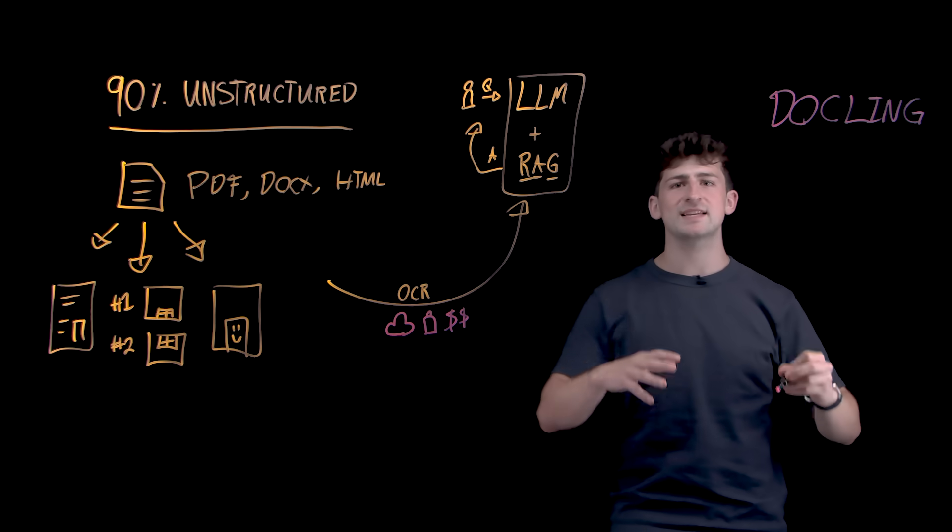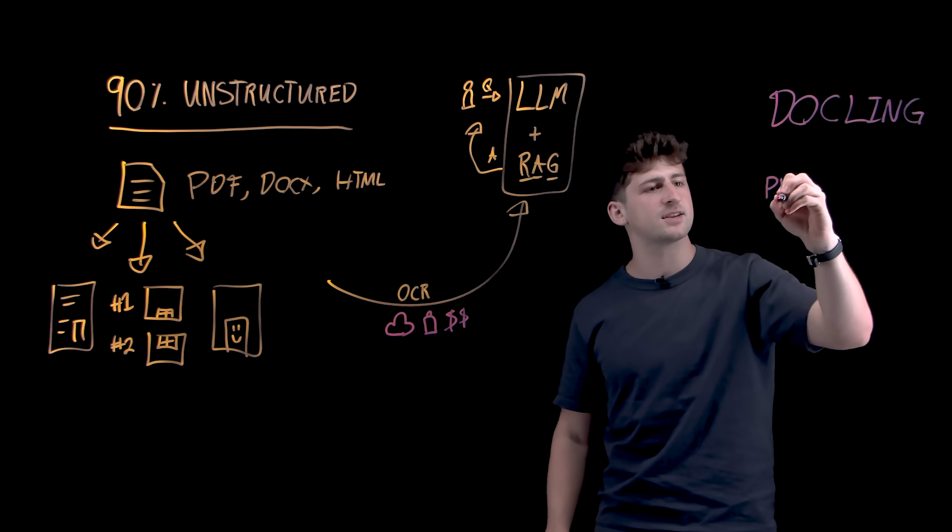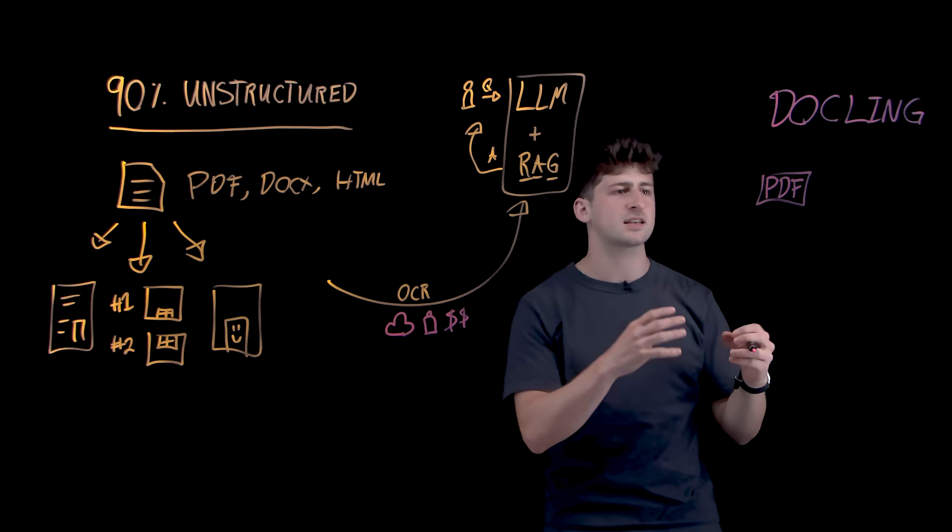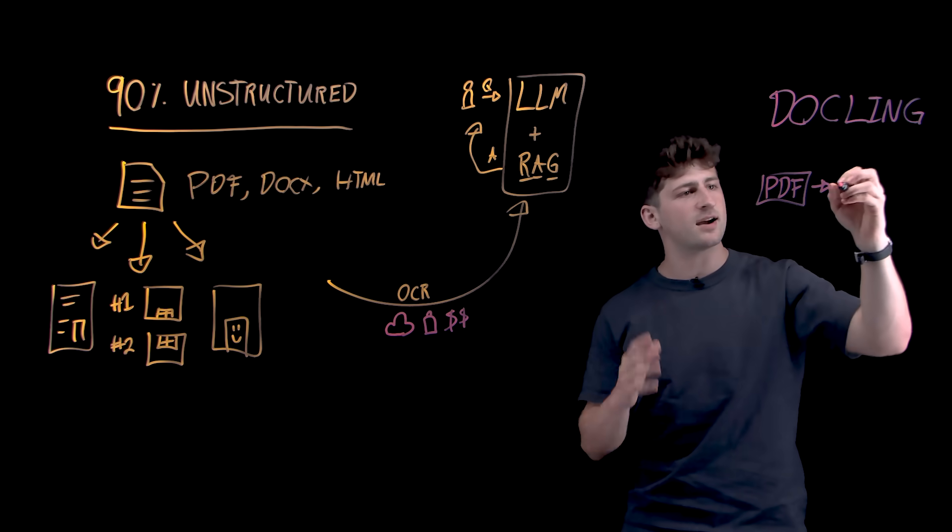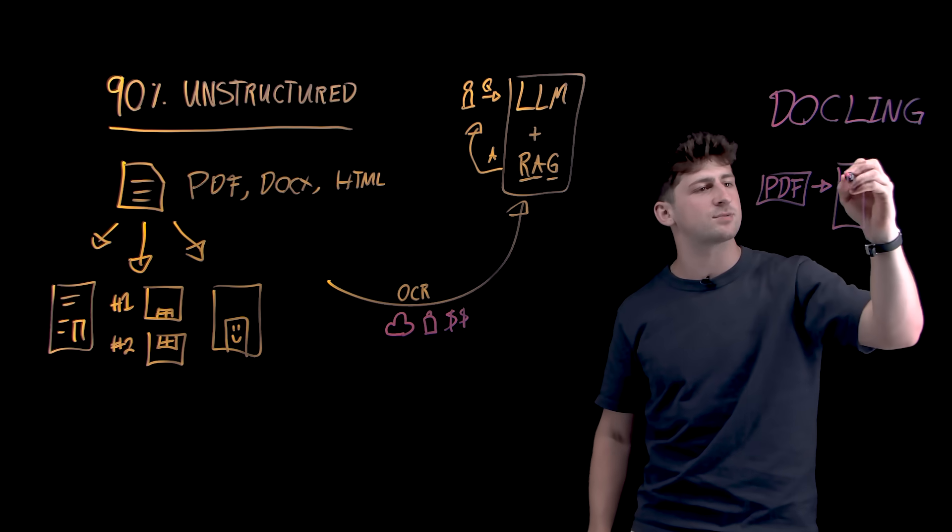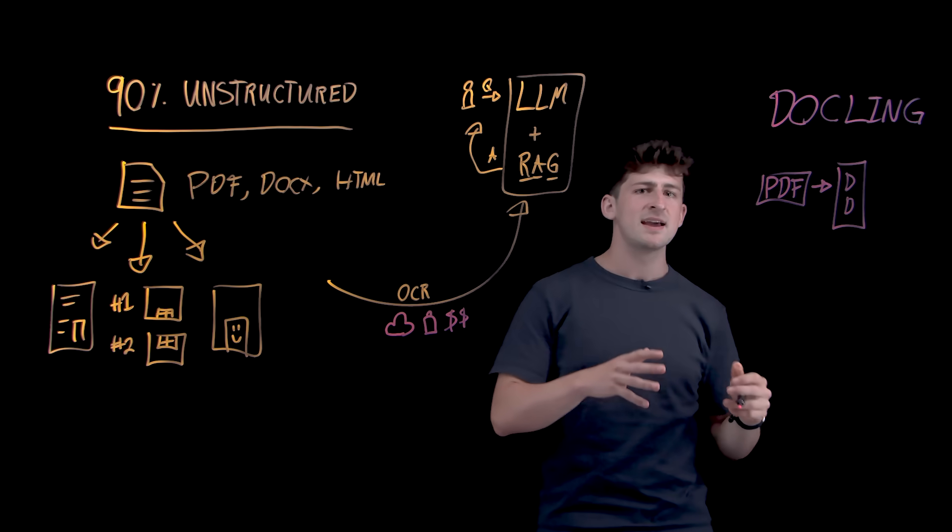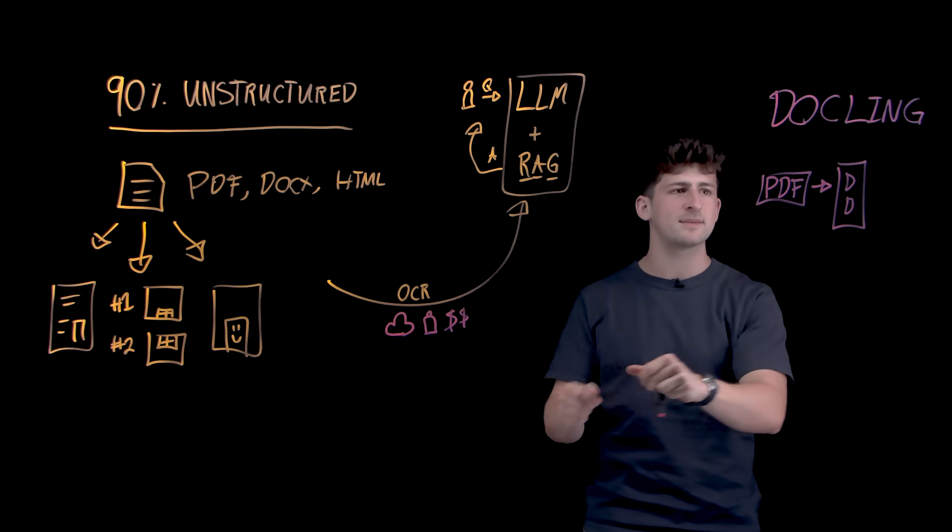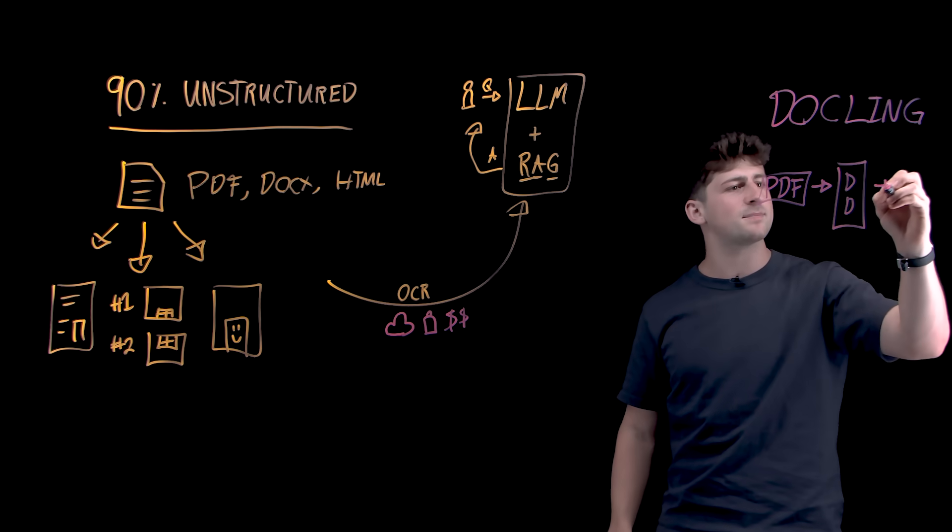And Dockling, what it allows us to do is parse common document formats such as PDFs, right? So working from this source document, we can turn this with Dockling into this abstraction, which is a Dockling document.